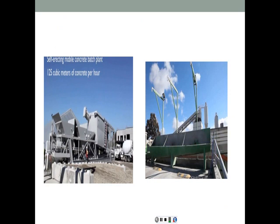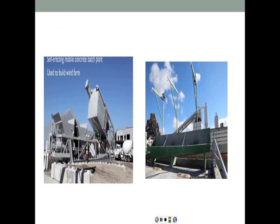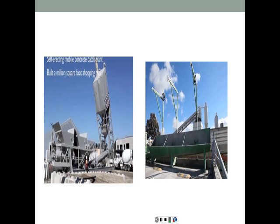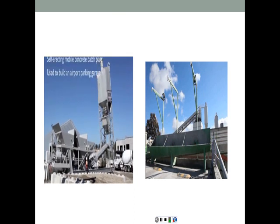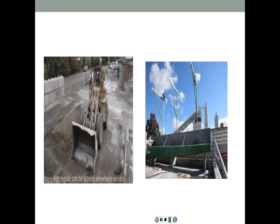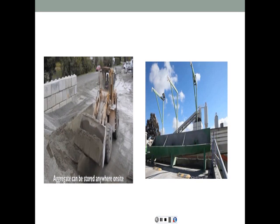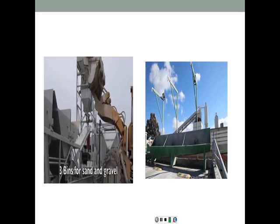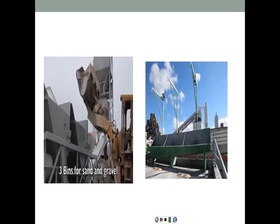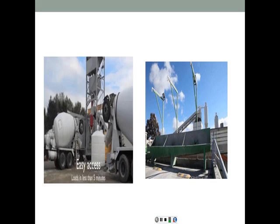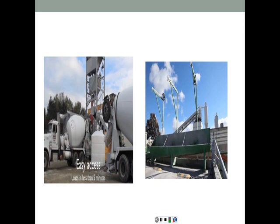Our system is being used to build a one-million square foot shopping mall, an airport parking lot, and a 200-turbine wind farm. The plant has a footprint approximately the size of an 18-wheeler, is self-erecting, and can be pouring within a day. We bring professional staff including an experienced batcher to the job site, taking ready-mix trucks off the road to produce a more environmentally friendly product. We can work to the customer's schedule including evenings, weekends, and last-minute jobs. Aggregate can be stored anywhere on the job site, and in some cases we can produce gravel on site.